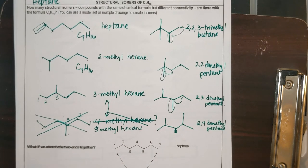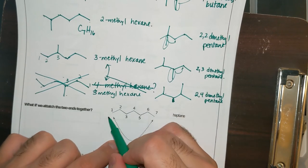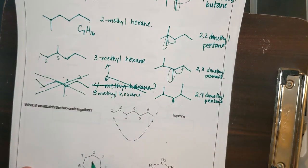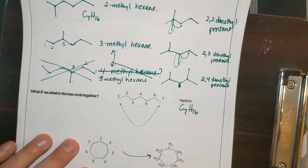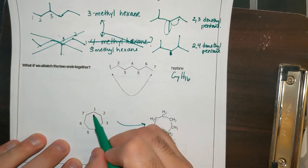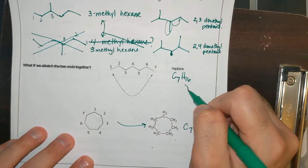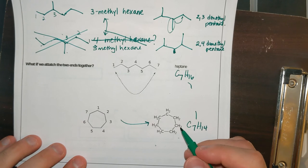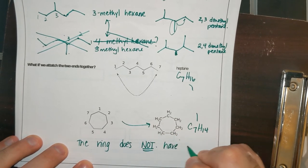So we just drew a bunch of different isomers of heptane — there are about three or four more we could draw, but I wanted to get you the idea of different connectivity. Now, what if instead of moving methyl groups, I took the two carbons on the end and connected them to make a ring? Heptane is C7H16 — would a ring still give me C7H16? Remember, carbon needs four bonds, so each carbon in the ring has two hydrogens: two, four, six, eight, ten, twelve, fourteen. This gives C7H14.